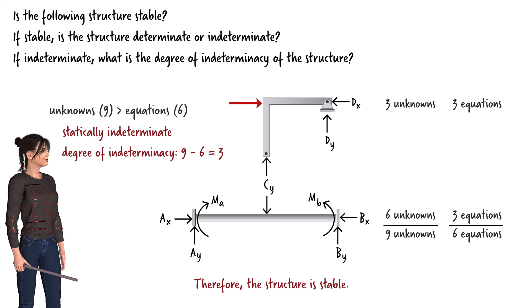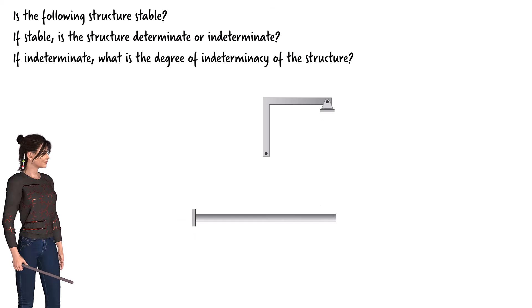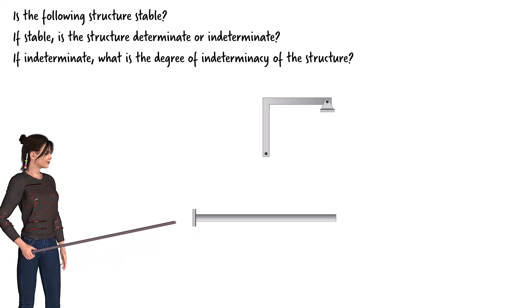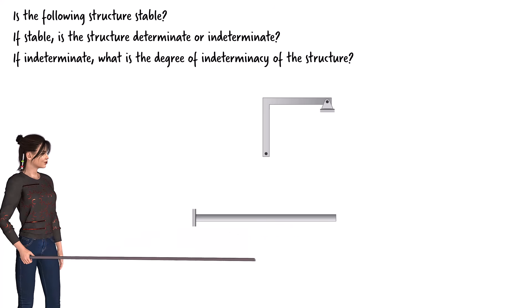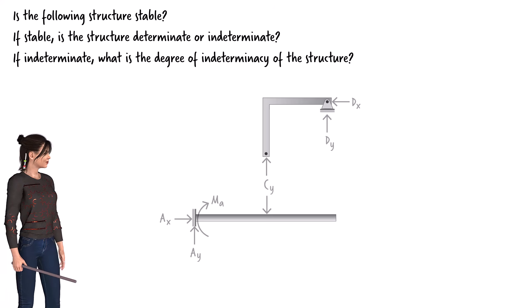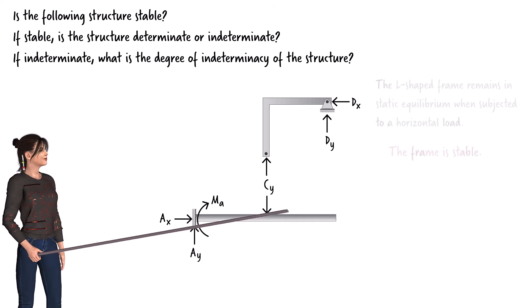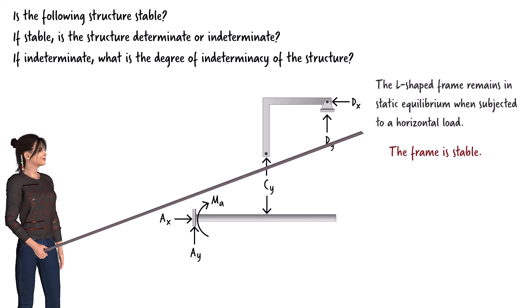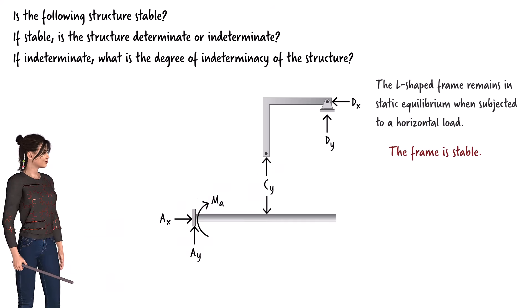To wrap up the lecture, let's examine another variation of the problem. Suppose the beam is fixed at the left end but free at the right end. Does this change make the structure unstable? Here is the free-body diagram of the system. We have already established that the frame is stable.